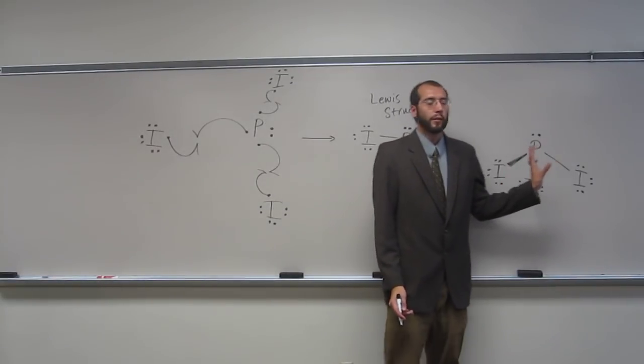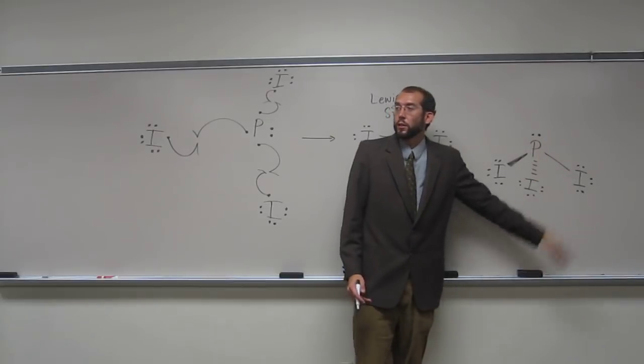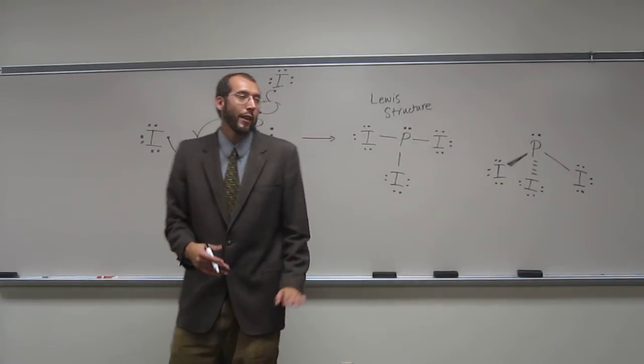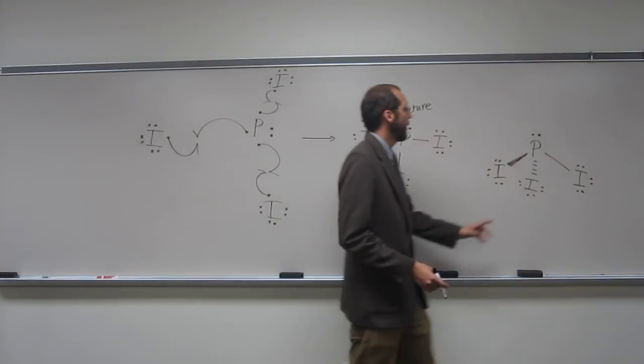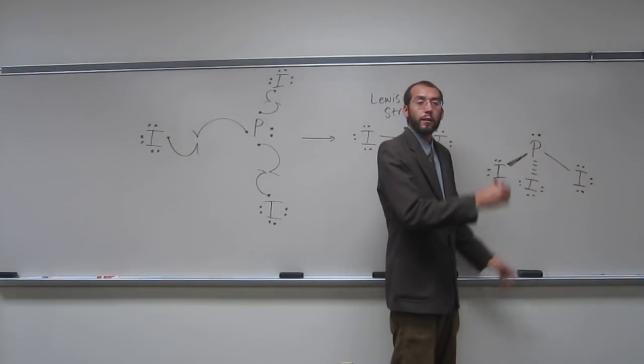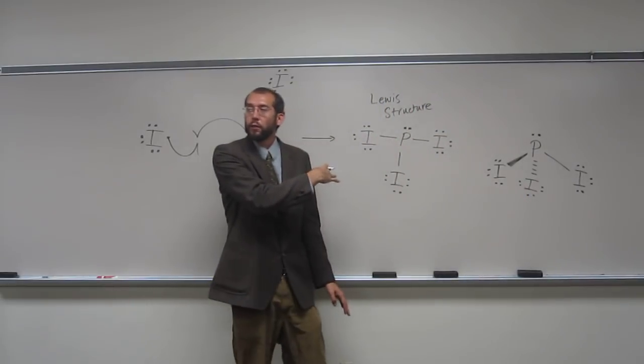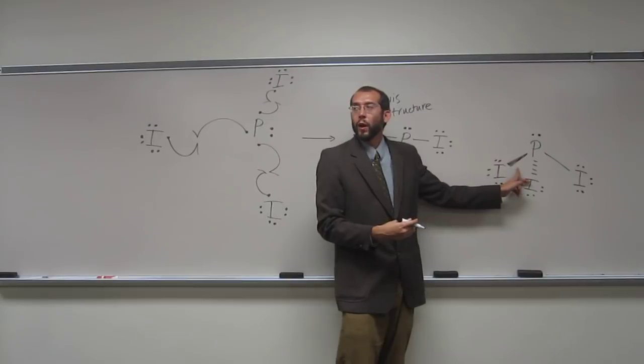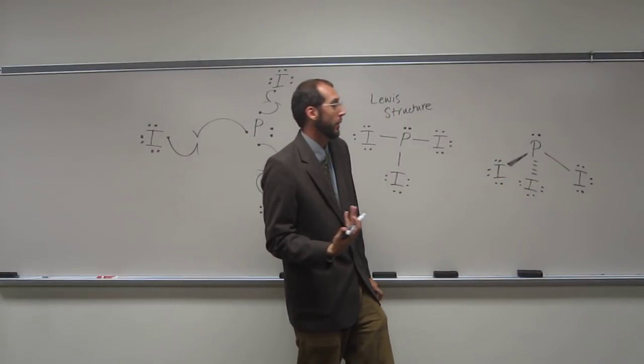So if you can see, right, any bond that's just a straight line means that it's in the plane of the board. Any bond that's a hashed line means it's behind the plane of the board. And any bond that's a wedged line means it's in front of the plane of the board.